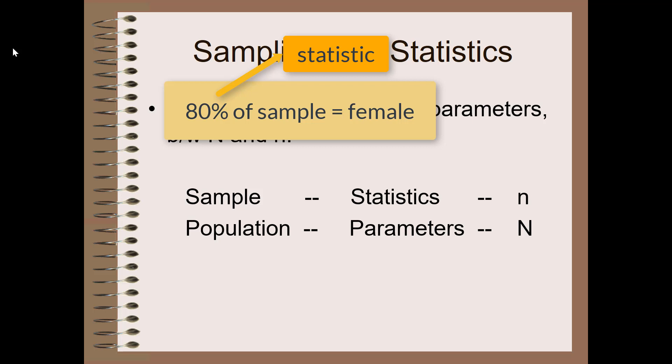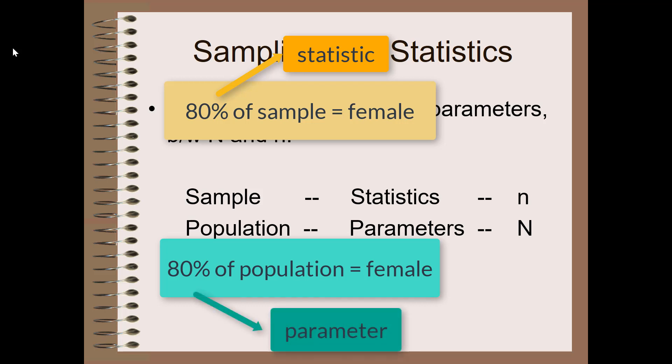When it comes to populations, we use big N and any information produced is referred to as a parameter. So if I were to say 80% of this particular population is female, that 80% is a parameter, not a statistic.